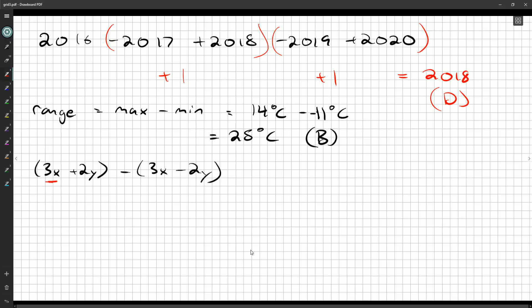And what's catching my eyes, we've got 3x minus a 3x. So these guys cancel out.